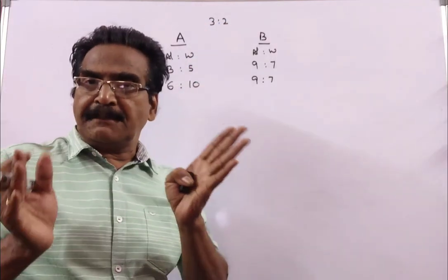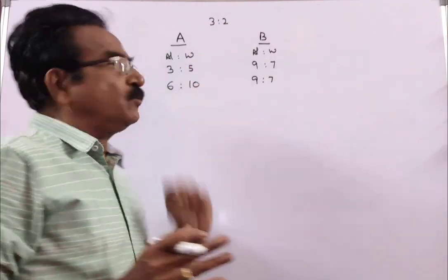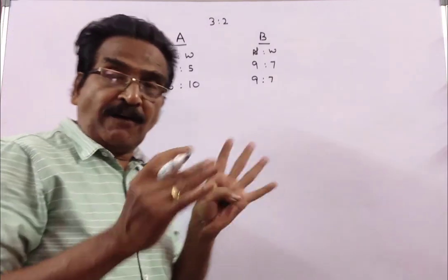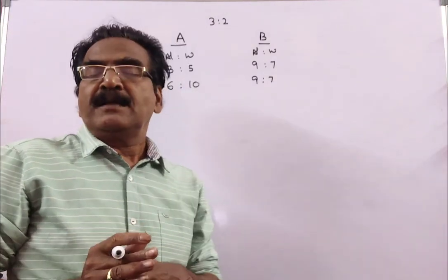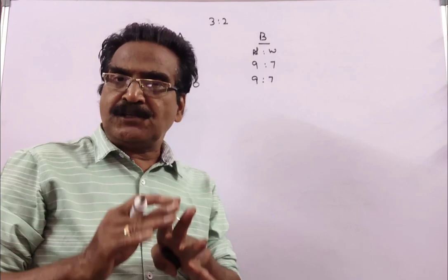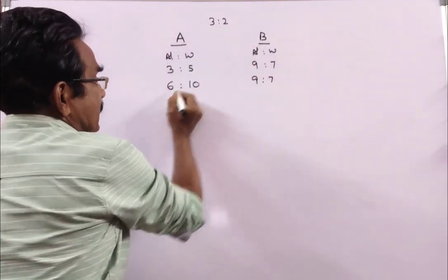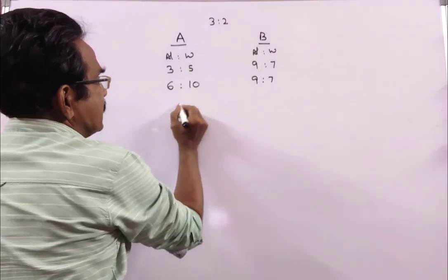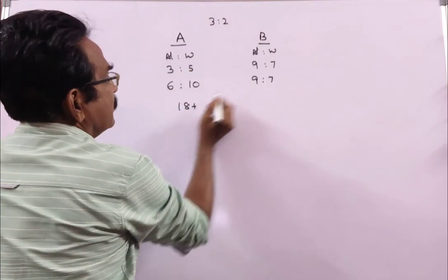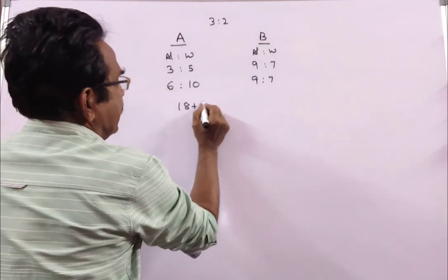These two liquids are mixed in the ratio 3 is to 2. Let us find the ratio of alcohol and water in the resultant solution. This is taken 3 parts: 3 times 6 is 18. This is taken 2 parts: 2 times 9 is 18.